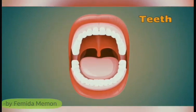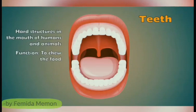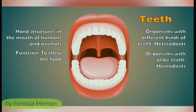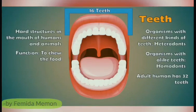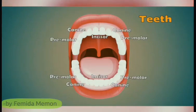The teeth are the hard structures in the mouth of humans and animals. Their main function is to chew food. All teeth are not alike and serve different functions. Organisms having different kinds of teeth are called heterodonts, while organisms where all teeth are alike are called homodonts, mainly animals. An adult human has 32 teeth — 16 in the upper jaw and 16 in the lower jaw. There are four different types of teeth: incisors, canine, premolar and molar.